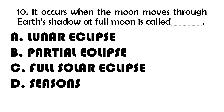Number 10. It occurs when the moon moves through the Earth's shadow at full moon — this is called blank. A. Lunar eclipse. B. Partial eclipse. C. Full solar eclipse. D. Seasons.